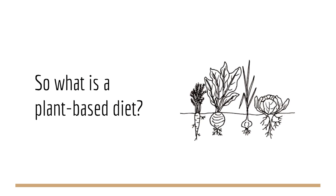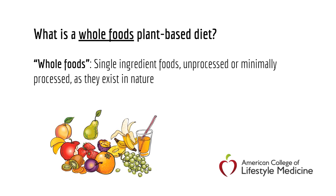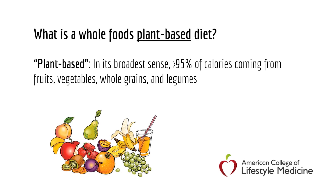So what exactly is a plant-based diet? The full term is a whole foods plant-based diet — whole foods meaning single ingredient foods, unprocessed or minimally processed as they exist in nature. Plant-based, in its broadest sense, means we're consuming at least 95% of our calories from fruits, vegetables, whole grains, and beans. Typically, when working on reversing diabetes in the office, we recommend going 100% until we start to see the results we're looking for. For a lot of people, complete abstinence is easier than perfect moderation when it comes to a plant-based diet.